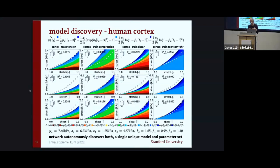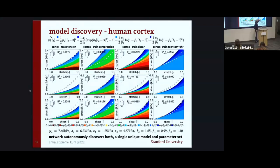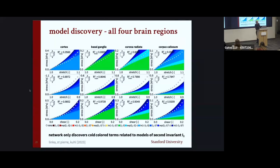We can then reduce the number of terms — that's what we call the discovered model. When we train on all three tests, we gain a model that in this case has only four terms instead of all 12. That's one of these 4,000 models, and in this case they're all blue. That's new — if you look at all the brain literature, people usually use terms from the first invariant, so there's more use of red terms. Nobody actually ever uses blue. But it turns out these blue terms are better. So from a modeling perspective, you actually learn something about what's the better selection. This is for all four regions and all terms fall in this blue category.